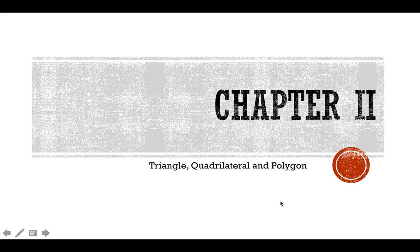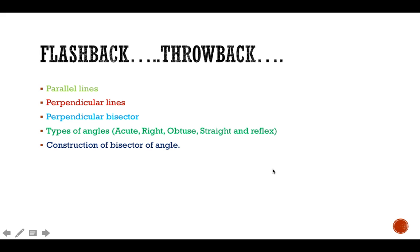Let's begin with some flashback. In the previous classes we learned about parallel lines, perpendicular lines, perpendicular bisectors, and types of angles like acute angle, right angle, obtuse angle, straight angle, and reflex angle. Along with that, we also constructed a bisector of the angle.